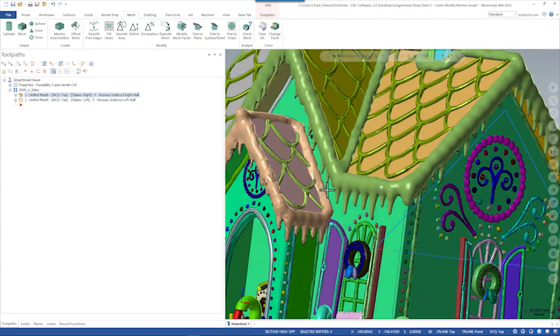So now we've removed that one corner icicle and this is a process we're going to have to repeat throughout this model on all the deep icicles that we have to work around. But Mastercam has all the mesh tools needed to really interface with this mesh body and make it something that we can make on the CNC machine.